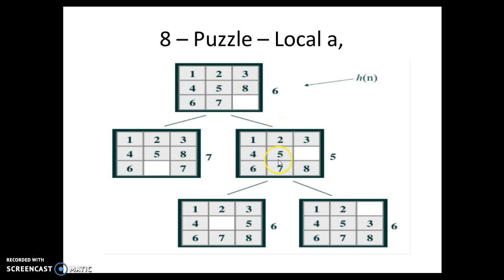And from this state, I have two possible moves. One, I can move 5 to my right-hand side. The other one, I could move 3 down. And for both the cases, my heuristic function is 6, which is not a better value when compared to my previous state.